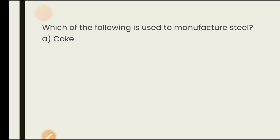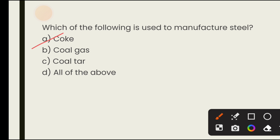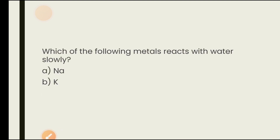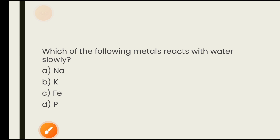Which of the following is used to manufacture steel? Options are coke, coal gas, coal tar, all of the above. Coke is used in steel manufacturing — it helps smelt iron and numerous metals. The answer is coke. Which metal reacts with water slowly? Sodium, potassium, and phosphorus are highly reactive. Iron reacts with water slowly and shows rusting properties. The answer is C — iron.